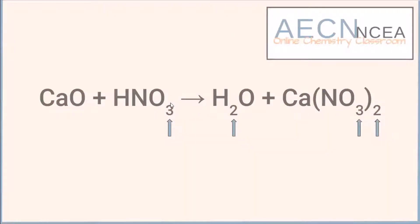The small numbers we see are subscripts that tell us how many of each atom we have in the compound. For example, here we've got one hydrogen, one nitrogen and three oxygens — that is the subscript. Here we've got two hydrogens and one oxygen. In this case we've got one calcium, and in the nitrate we've got one nitrogen and three oxygens, but because of the brackets we've got two nitrates — so two nitrogens and six oxygens. We've multiplied everything inside that bracket by two.